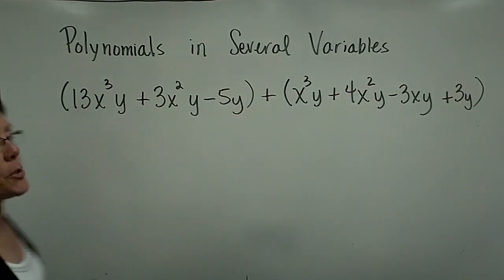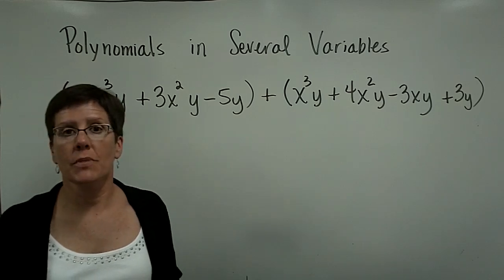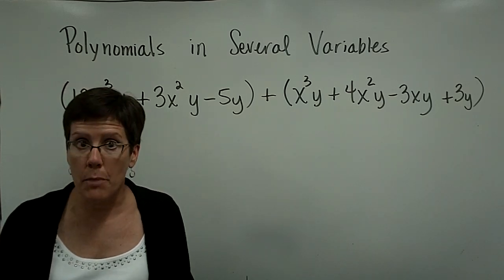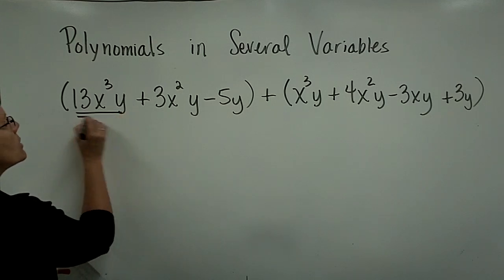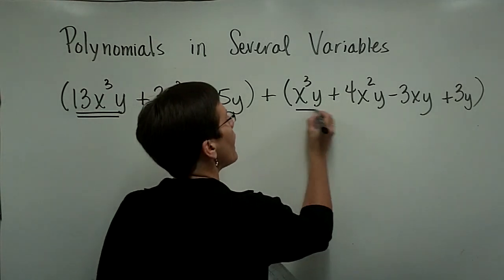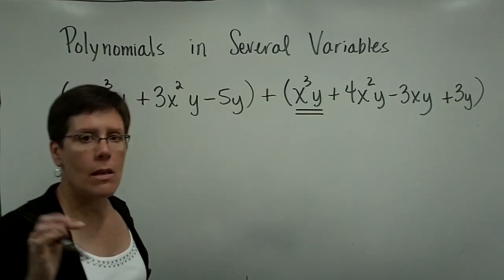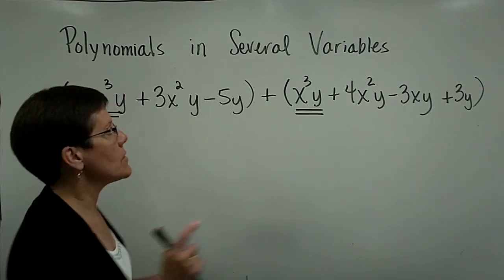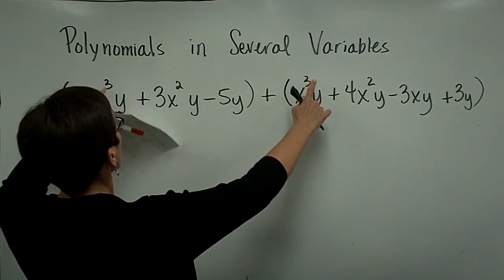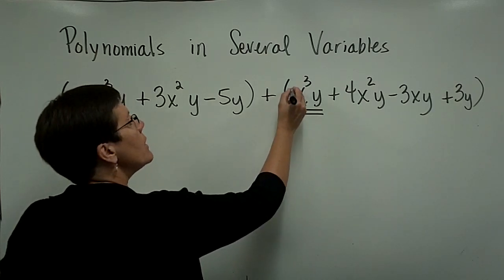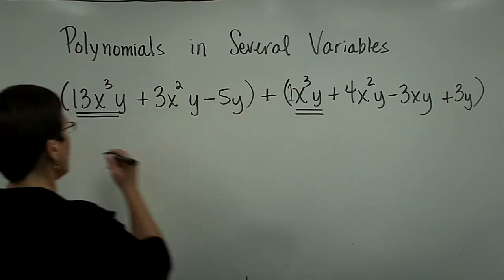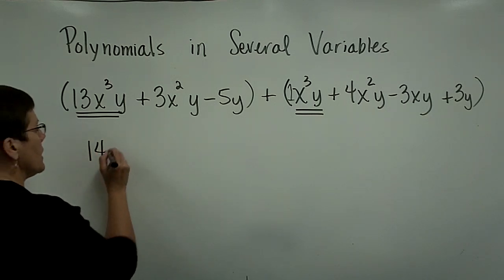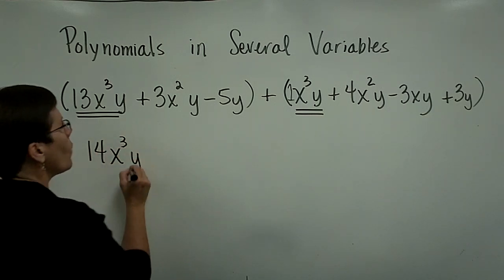Let's look for our like terms. Like terms are those terms that have the same variable raised to the same power throughout the term. So this 13x³y and this 1x³y, the variables are the same raised to the same power. Both x's are cubed and the y are to the first power. This one has a coefficient of 1. So 13 plus 1 is a total of 14x³y.